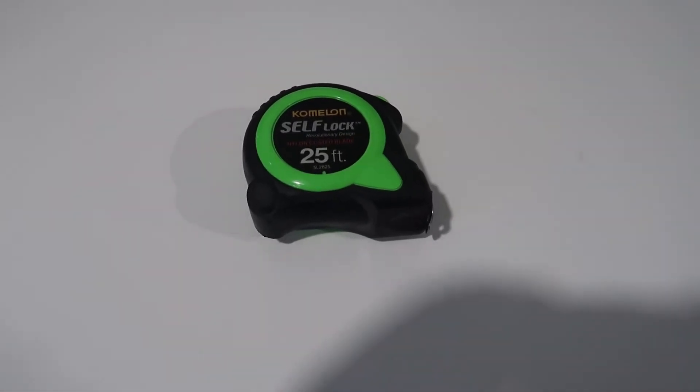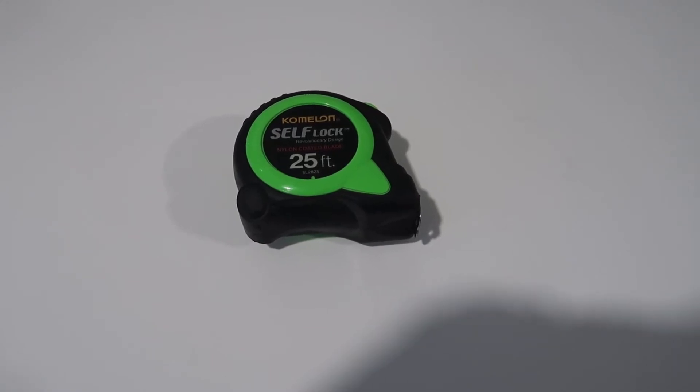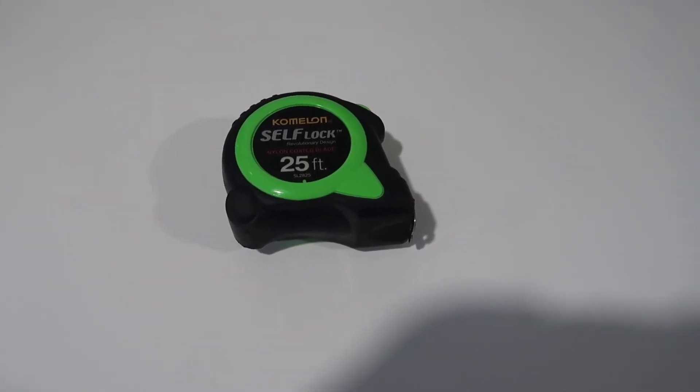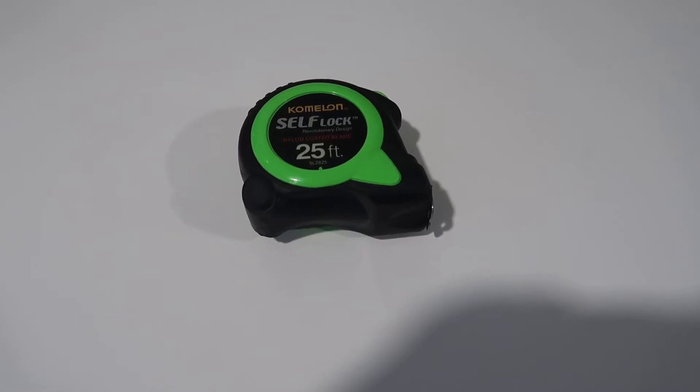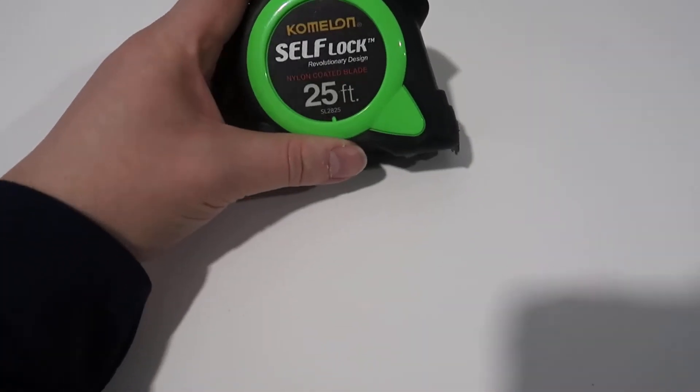Hey, what's going on guys? John here, and today I wanted to do a quick video review for the Comelon Self-Lock Tape Measure. This is the 25-foot version. You can get these in different lengths and colors. This one has a very bright green.